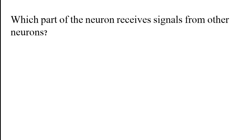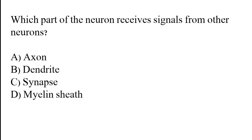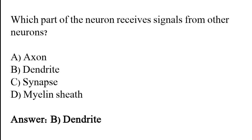Which part of the neuron receives signals from other neurons? Options: Axon, Dendrite, Synapse, Myelin Sheath. The correct answer is option B. Dendrite is the part of the neuron which receives signals from other neurons.